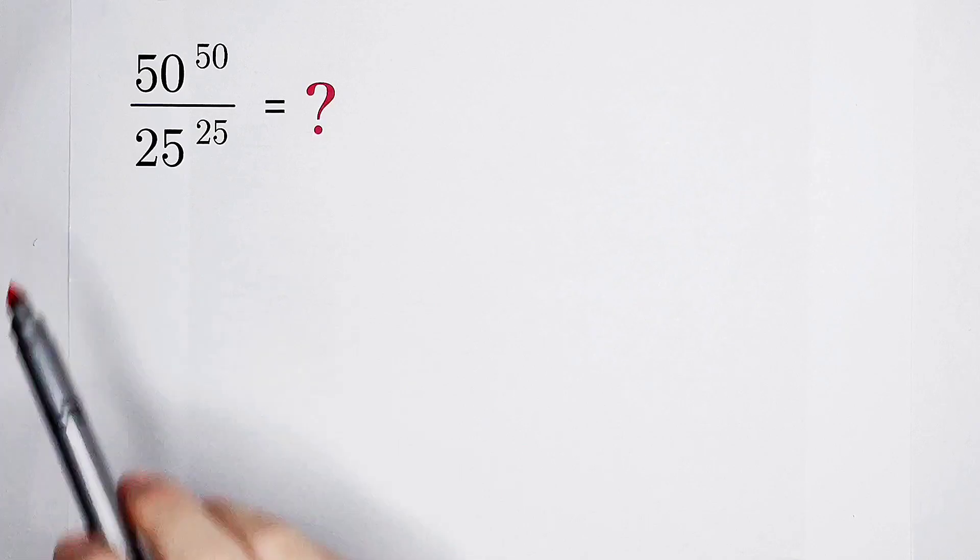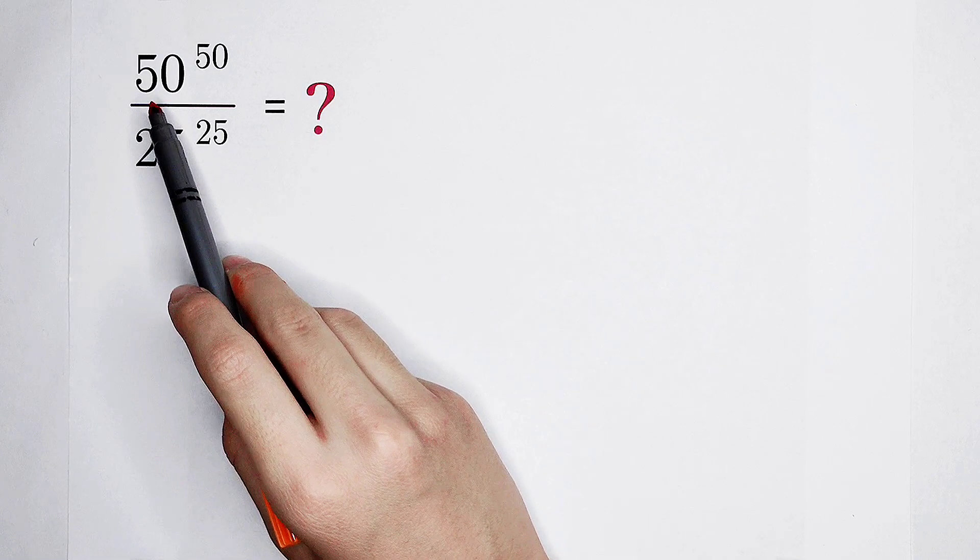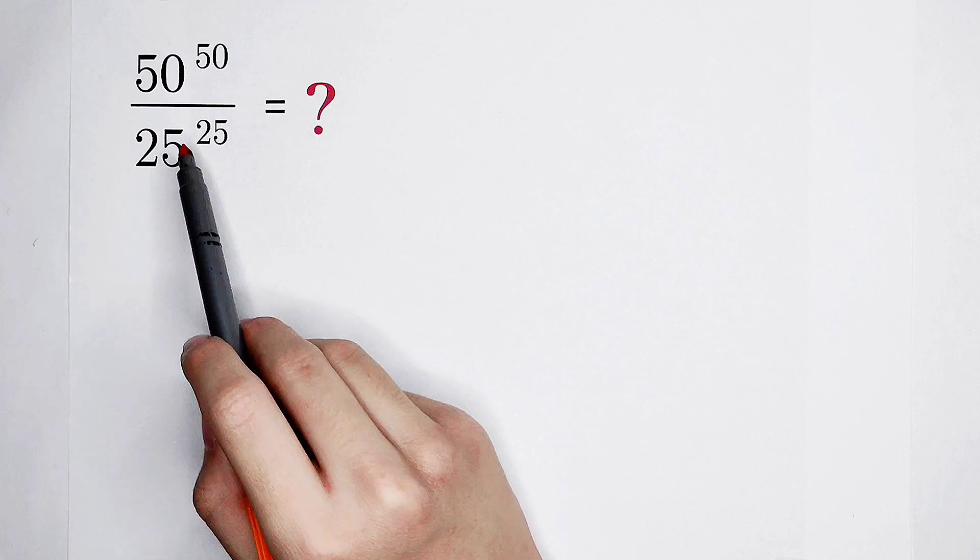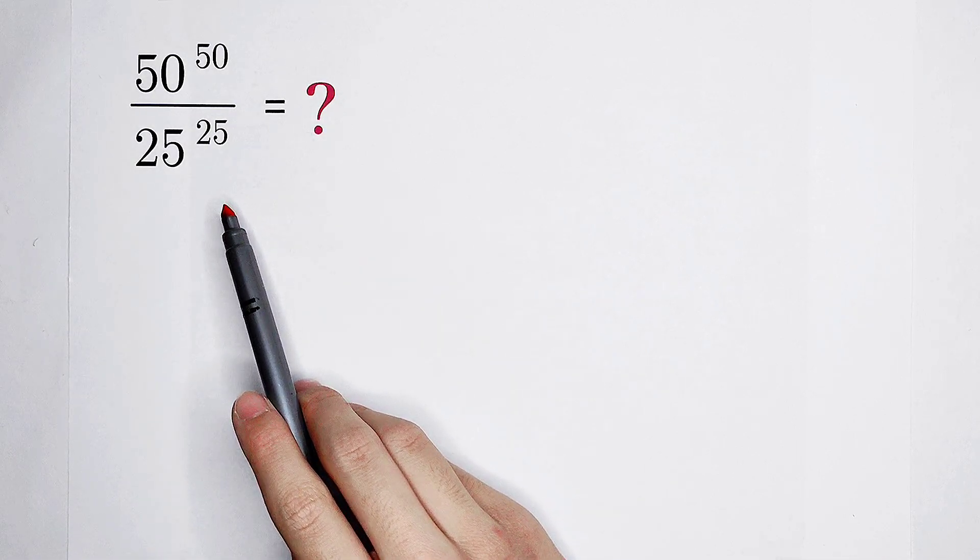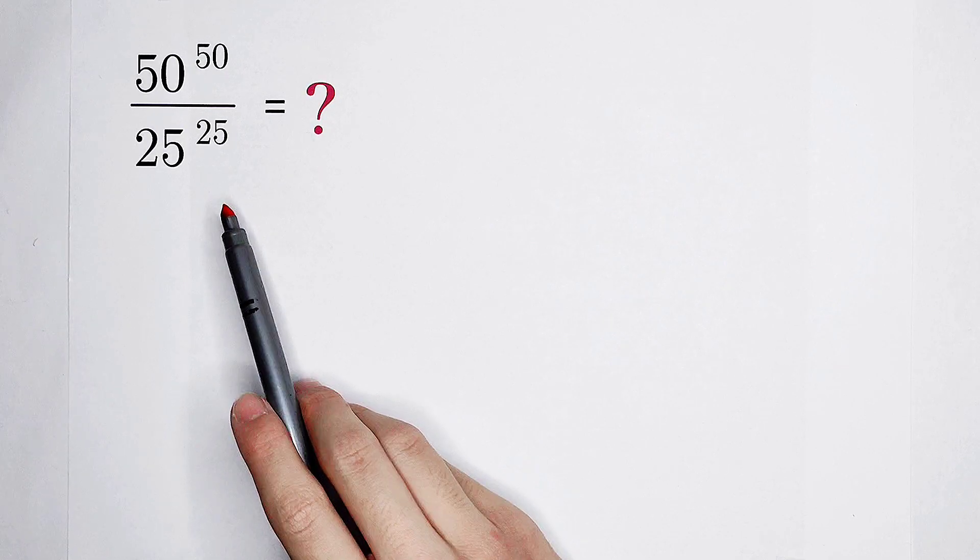Welcome back to Math We Know. Simplify 50 to the power 50 divided by 25 to the power 25. This fraction is a little bit horrible, but I have a very easy trick to deal with it.